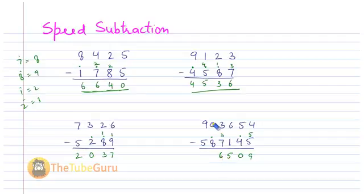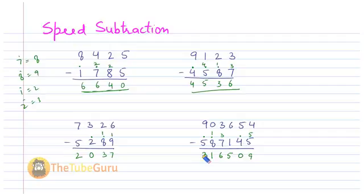Zero minus nine is not possible, so I take the complement of nine, which is one, and put a dot here. Zero plus one is one. And nine minus six is three. This is my answer.